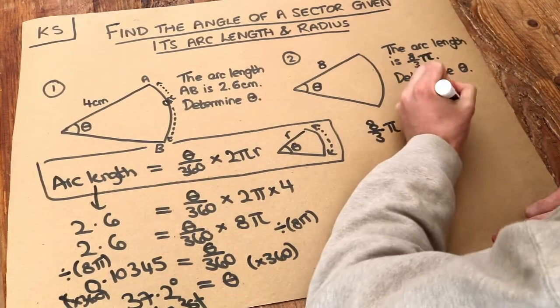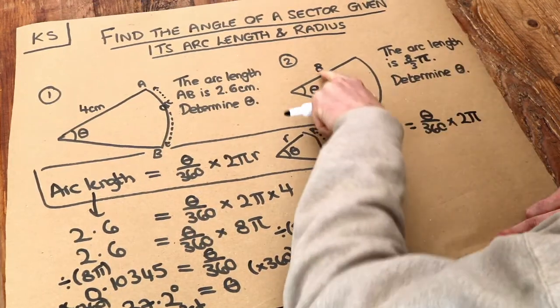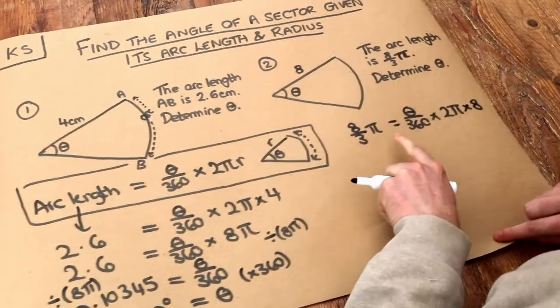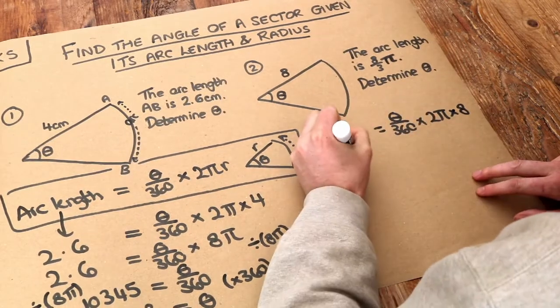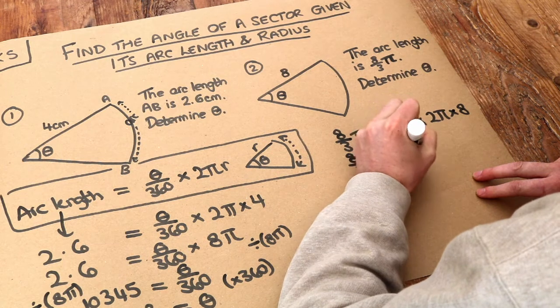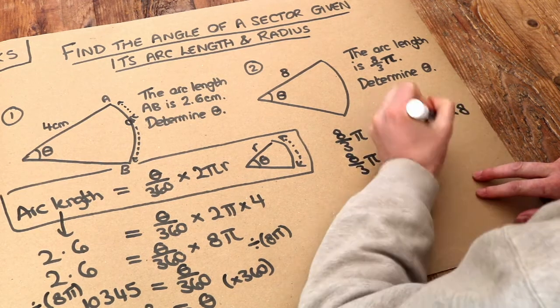Times 2πr. So 2πr. So 8. So I do say times by 8. Now we just need to solve this equation. Let's tidy up first. That's θ/360. 2π times 8 is 16π.